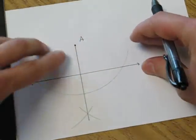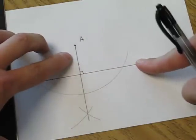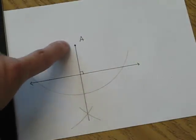And here we have a line that is perpendicular to a given line but also passes through a point that's not on the line.